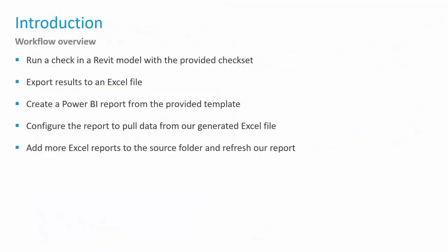The general workflow is: run a check inside a Revit model with the provided check set, export those results to an Excel file, create a Power BI report from the provided template, configure the report to pull data from the generated Excel file, and then over time simply add more Excel reports to the folder where Power BI is looking — the report will automatically update, refresh, and aggregate that data.